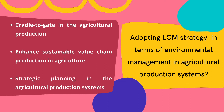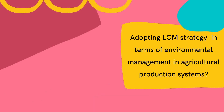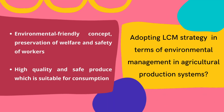Agriculture is the main driver of environmental concern, so adopting a life cycle management strategy in environmental management of agriculture production systems is very important. It involves cradle-to-gate in agriculture production, enhances sustainable value chain production, improves farmers' income, supports strategic planning by integrating environmental and food safety issues, establishes environmentally-friendly concepts, preserves worker welfare and safety, and produces quality and safe produce suitable for consumption.